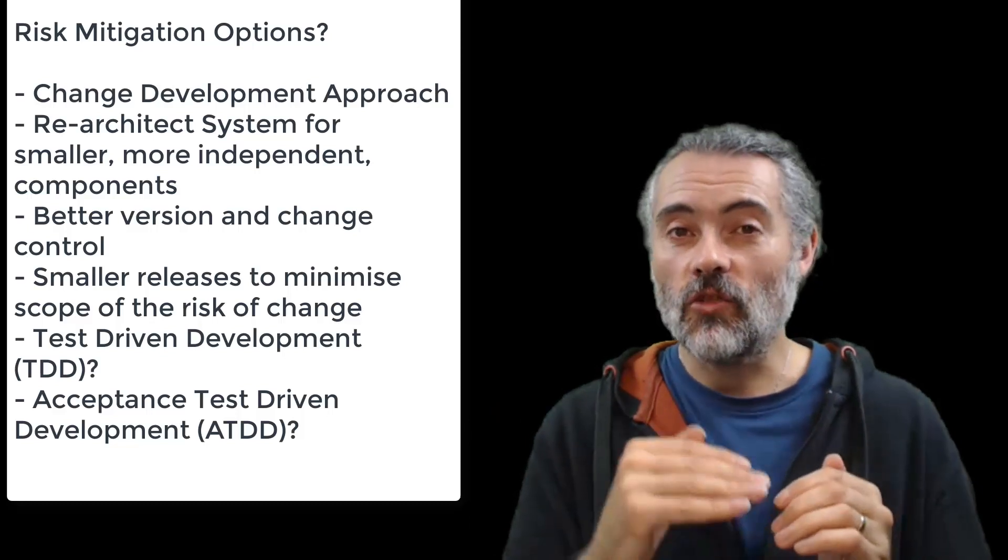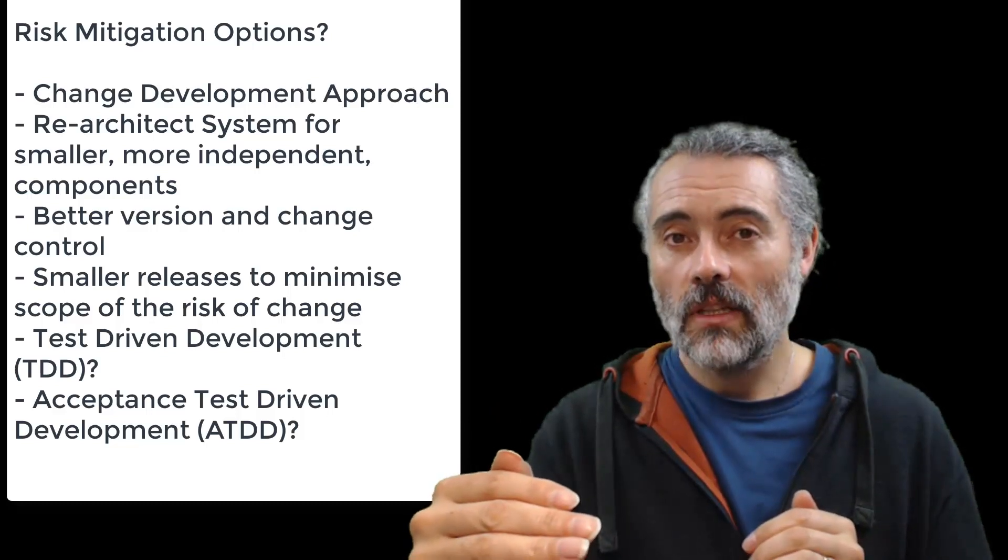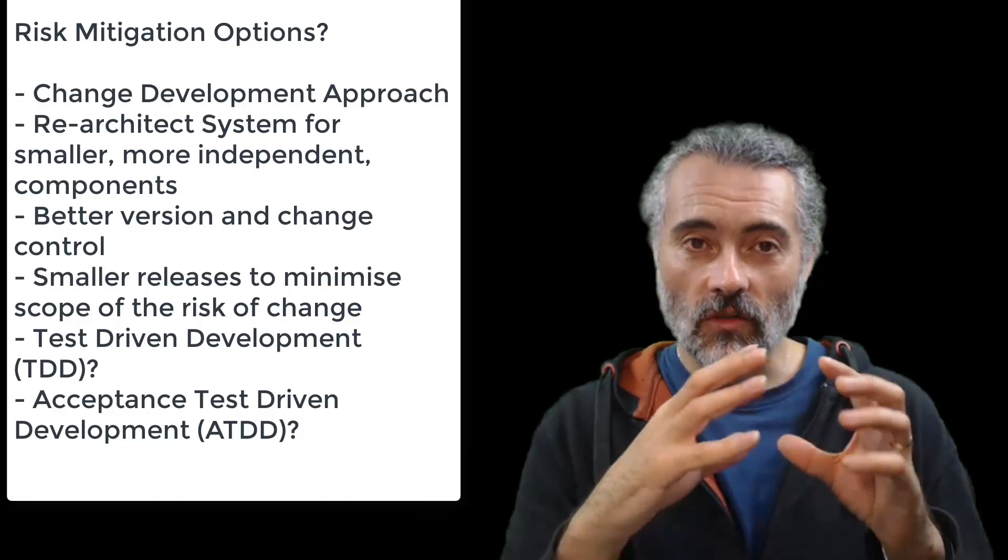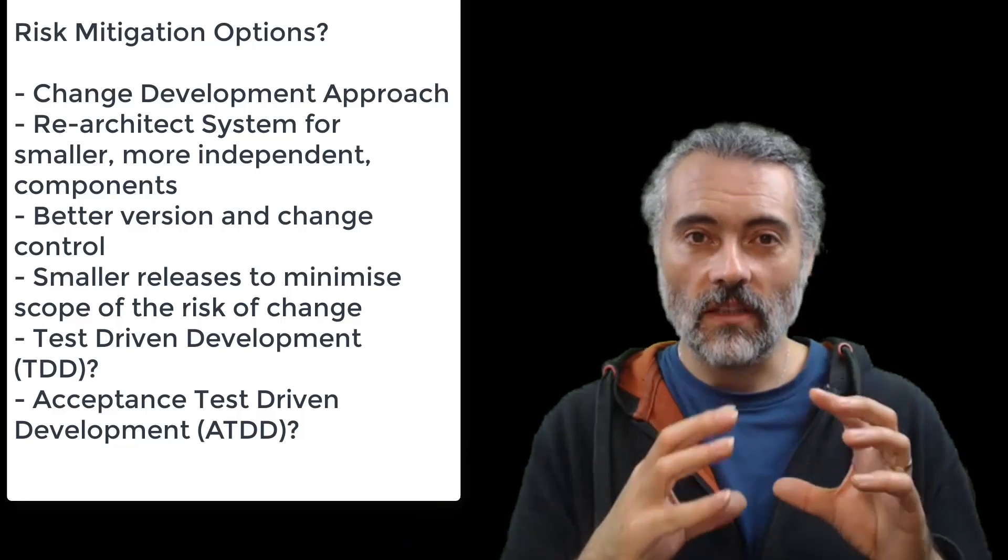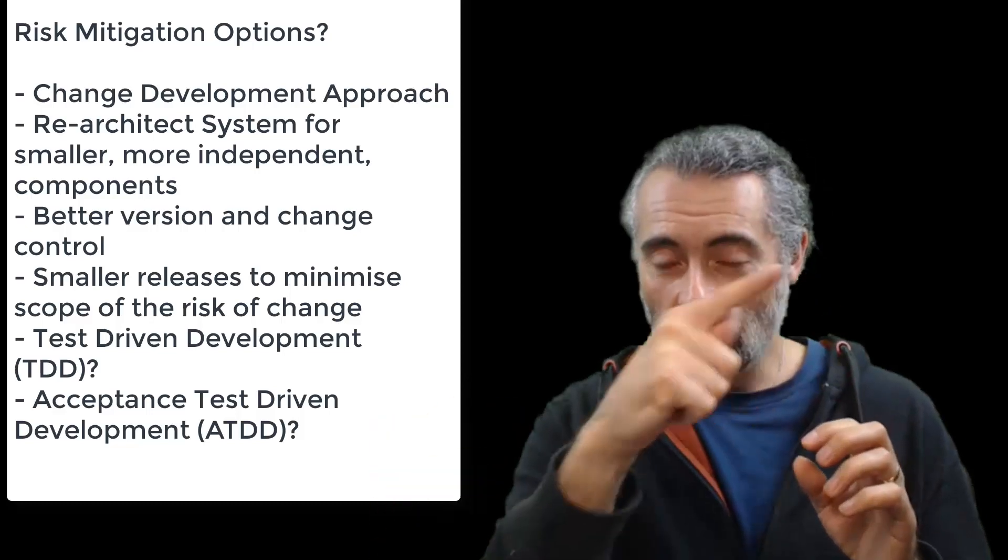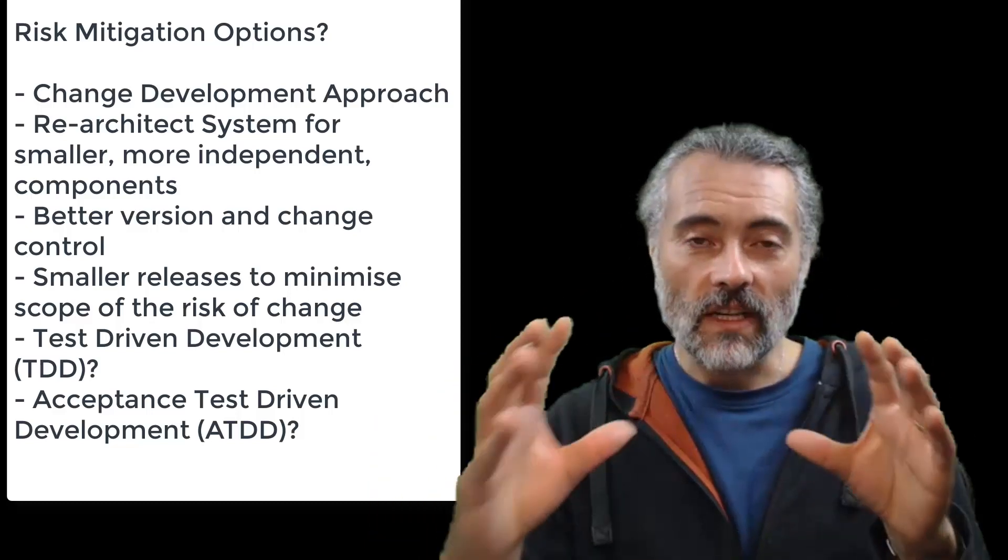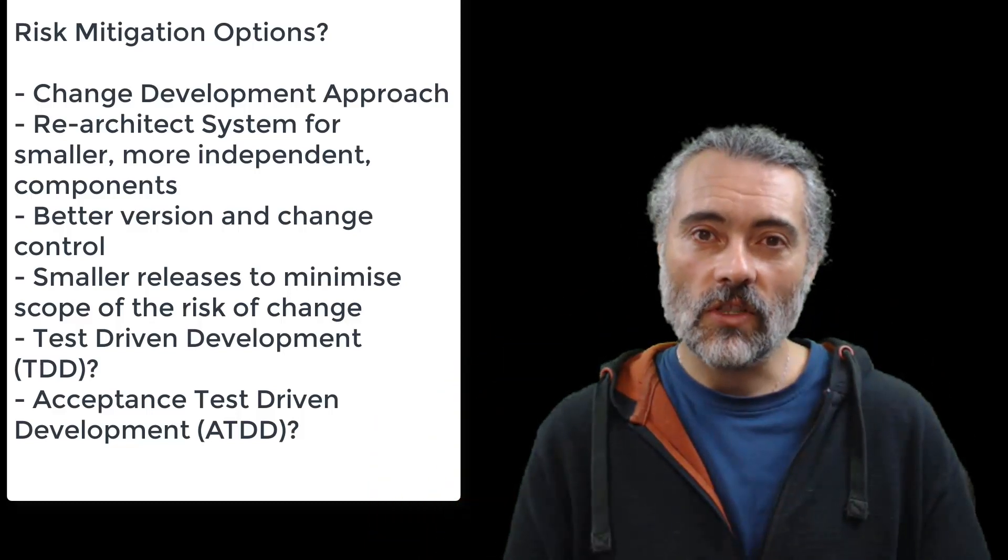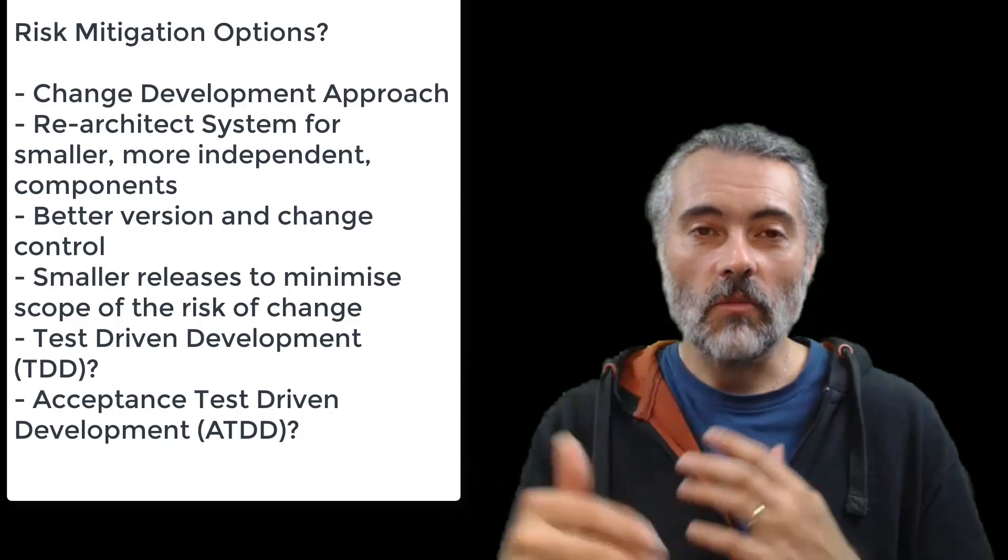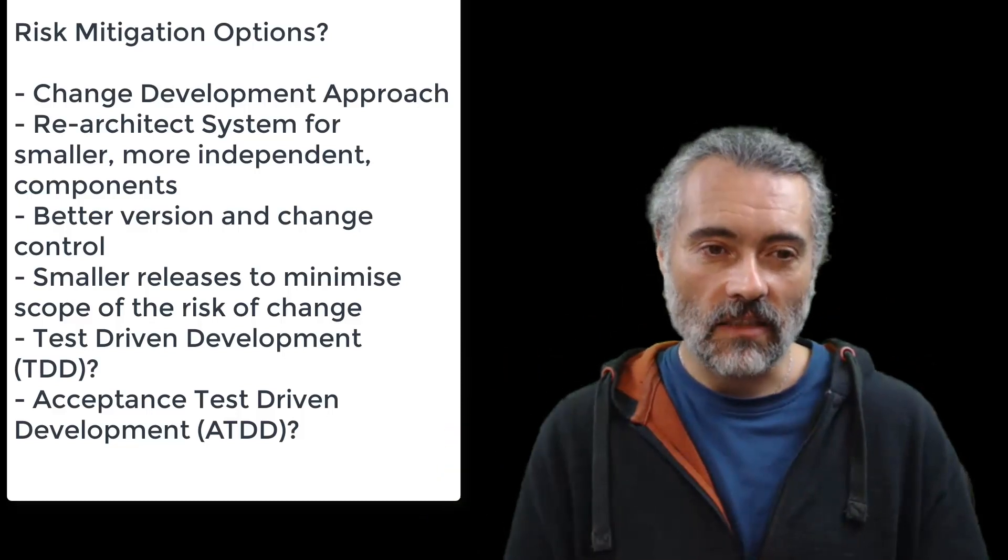Acceptance test driven development, if it's actually driving development, can help where we write the acceptance test and we write the criteria and then we automate the criteria for those changes. Then presumably it will go through the flow and we've actually got automated execution across that, which longer term will help mitigate the risk of changes impacting it.